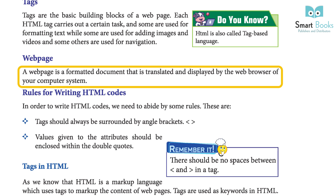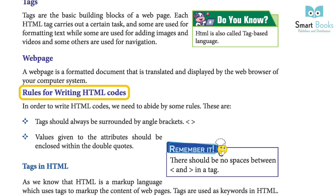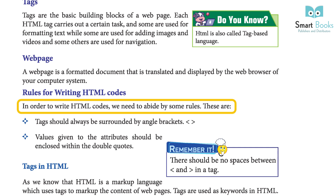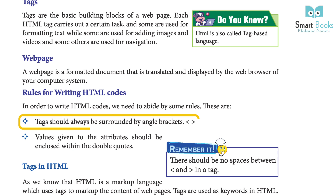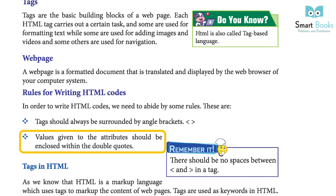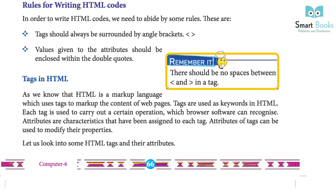Rules for writing HTML codes: In order to write HTML codes, we need to abide by some rules. Tags should always be surrounded by angle brackets. Values given to the attribute should be enclosed in double quotes. There should be no spaces between brackets in a tag.